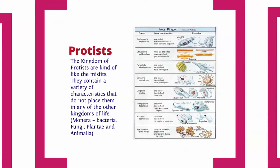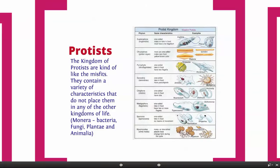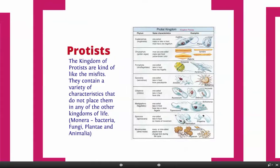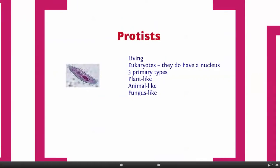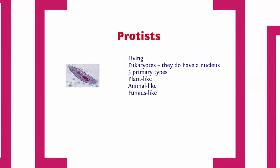Protists — the kingdom of protists are like misfits. They don't fit in anywhere and have a variety of characteristics. They don't really fit with any of the common kingdoms: bacteria, fungus, plants, or animals. They're very different from each other — a euglena doesn't look anything like a chrysophyta. They are living and all eukaryotes, so they all have a nucleus. They're divided into three subcategories: plant-like, animal-like, and fungus-like.